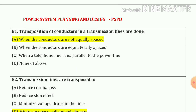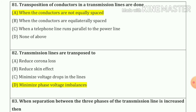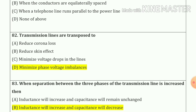Question number 81: transposition of conductors in a transmission line is done when conductors are not equally spaced — option number A. Question number 82: transmission lines are transposed to minimize phase voltage imbalances — option number D.